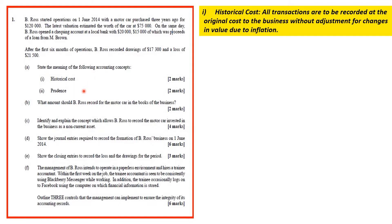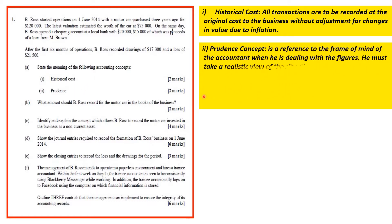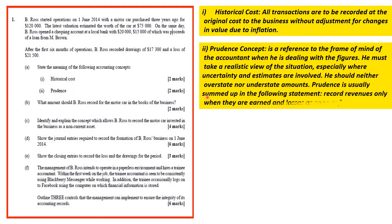Next, we have prudence. Prudence is a reference to the frame of mind of the accountant when dealing with the figures. He must take a realistic view of the situation, especially where uncertainty and estimates are involved. He should neither overstate nor understate amounts.